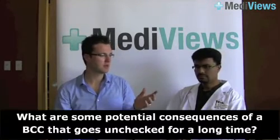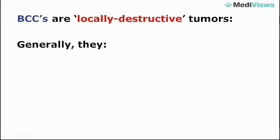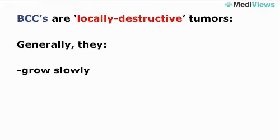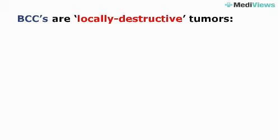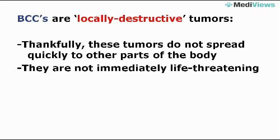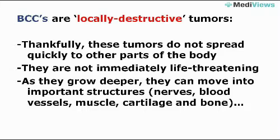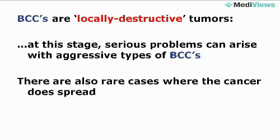If someone had a basal cell carcinoma that went unchecked for a long period of time, what are some potential consequences? Basal cell carcinomas are locally destructive tumors — they grow slowly, but they continue to grow deeper and wider into the skin and the structures below. Thankfully, they're not the type of cancers that quickly spread to other parts of the body and become life-threatening. However, as they grow deeper, they can run into important structures like nerves, blood vessels, muscle, cartilage, or bone — and that's when you get into trouble with aggressive variants.